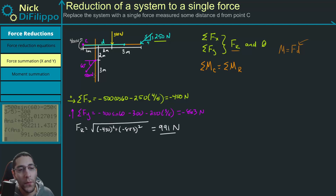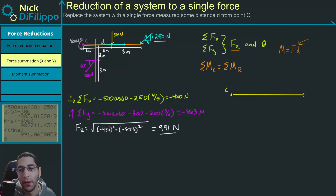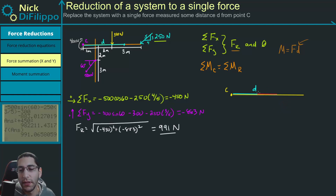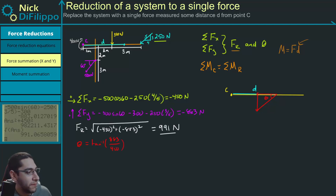This resultant force needs to act some distance away from point C and at an angle. The resultant has components of minus 883 in y and minus 450 in x. So theta is going to be equal to the inverse tangent of 883 over 450, which gives us 63 degrees. My resultant force acts at 63 degrees.